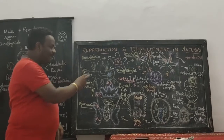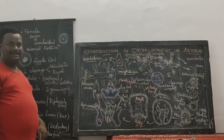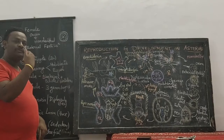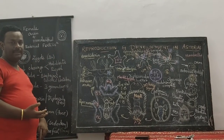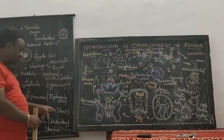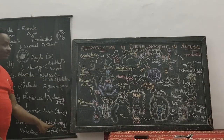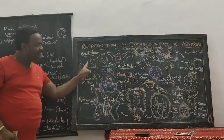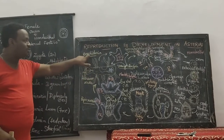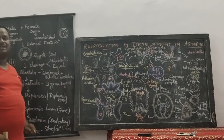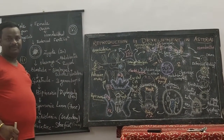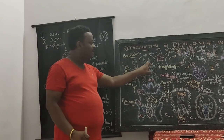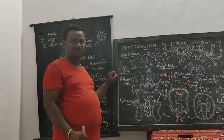The speciality related to brachiolaria is that it will take the larva, which is free-swimming initially, to the stage of sedentary. So the stage of sedentation for the life cycle of Asterias is brought about by this larval stage called brachiolaria.